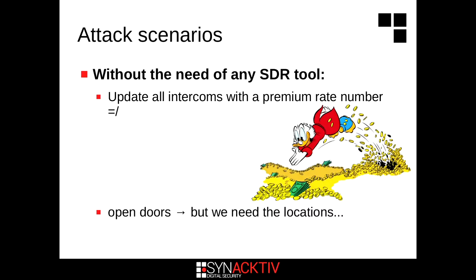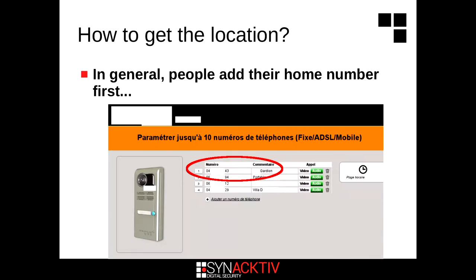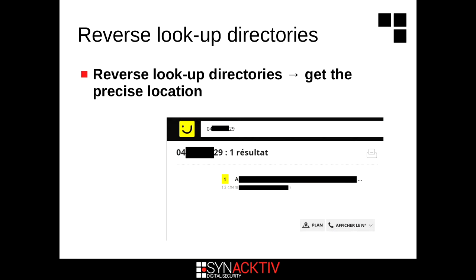We can also open the door, but to open a specific door, we have to know the location. To find the location: if people have their home number in the resident list, you can use a reverse lookup directory to get the address, go to that address, open the door, and do what you want — plug your device, and so on.